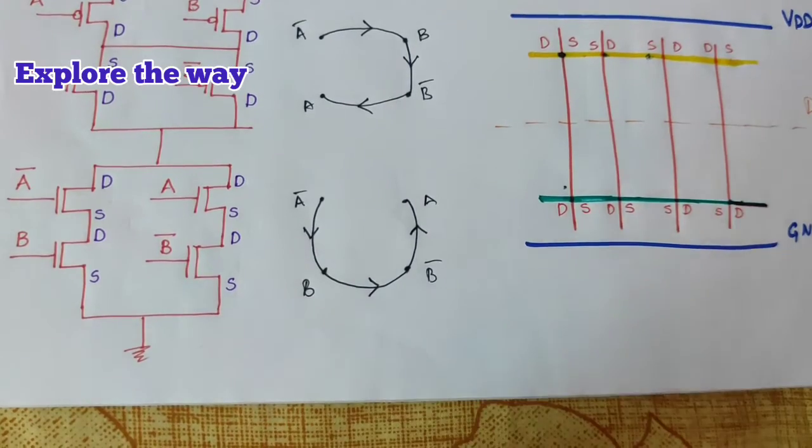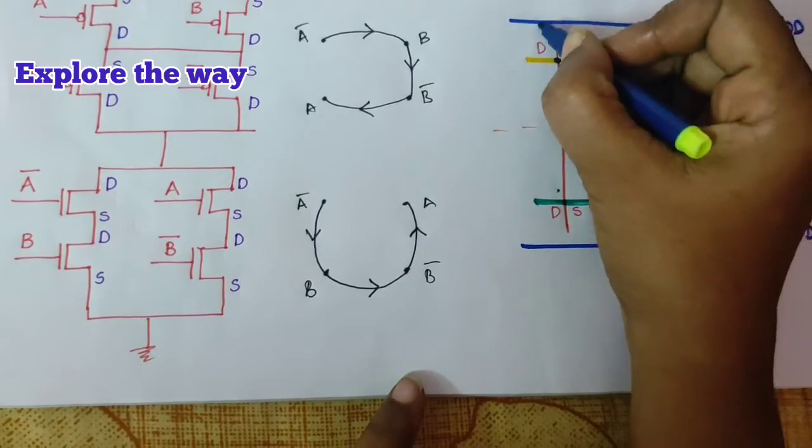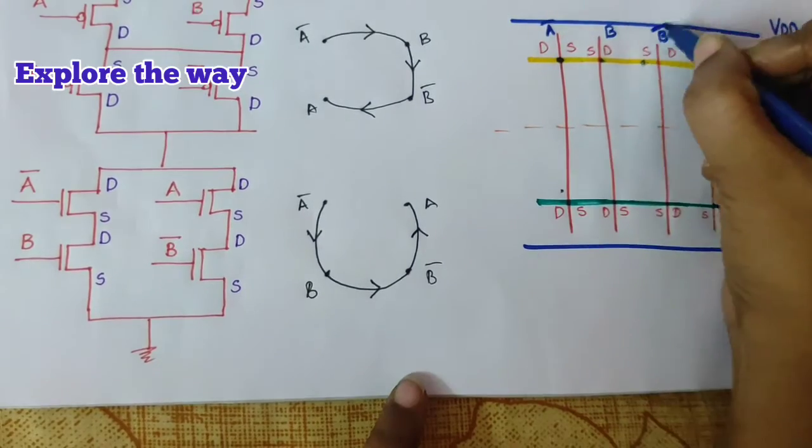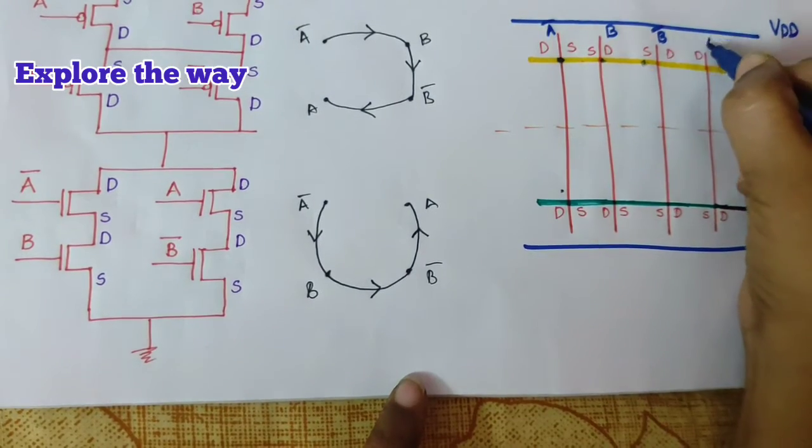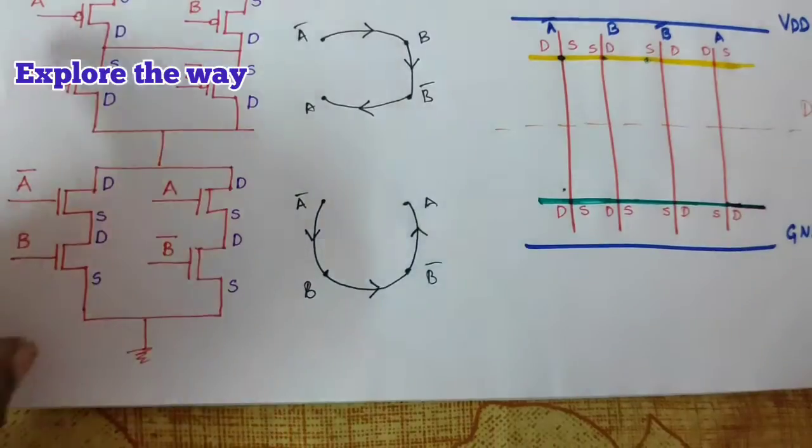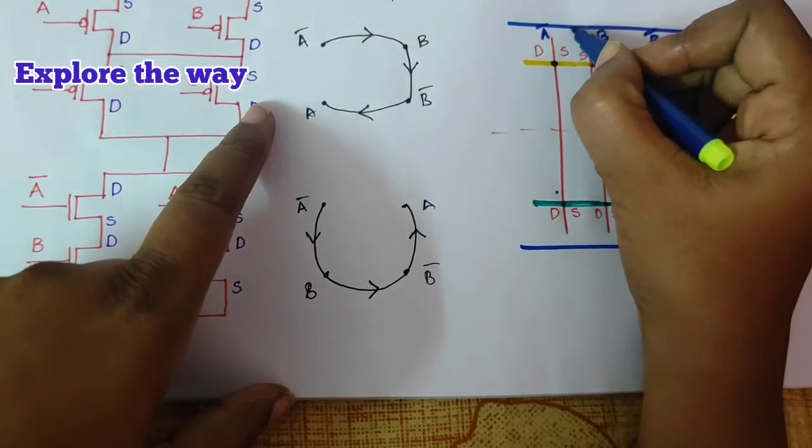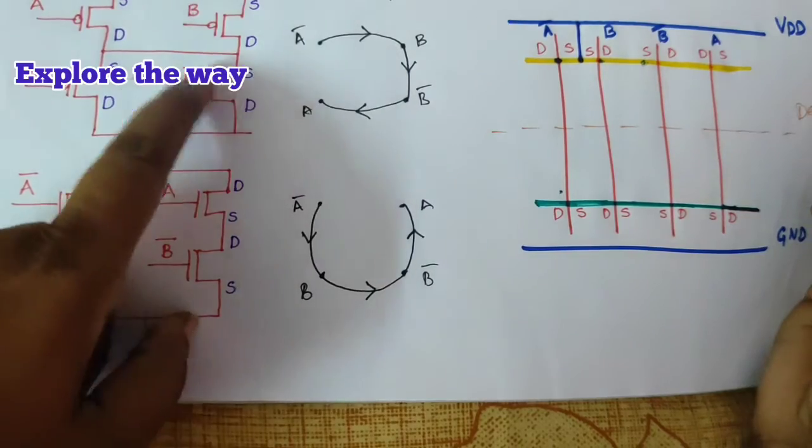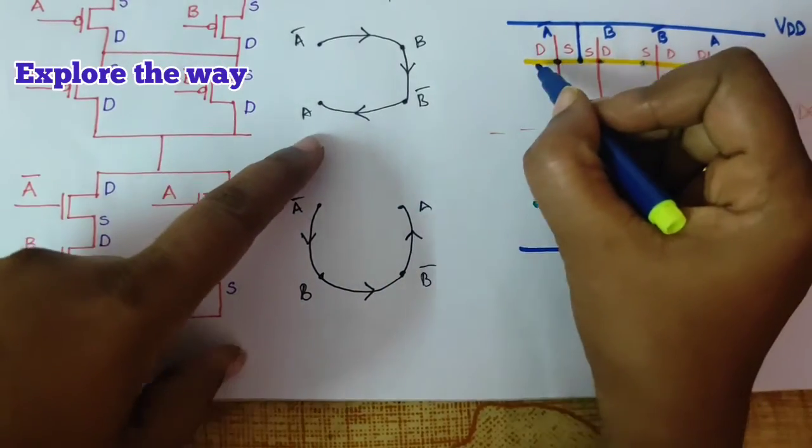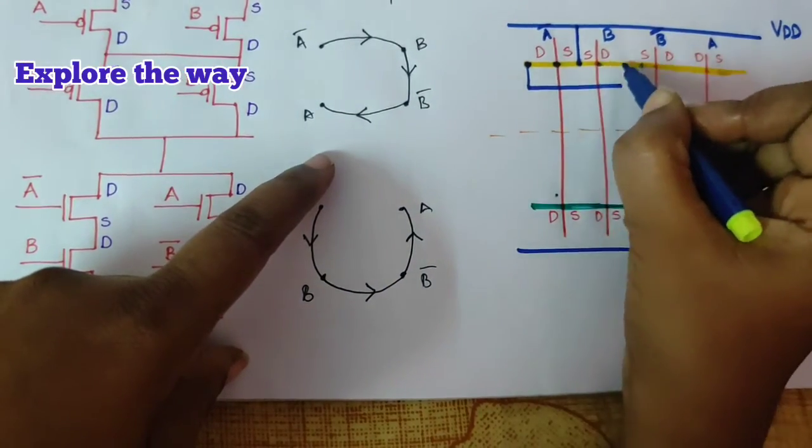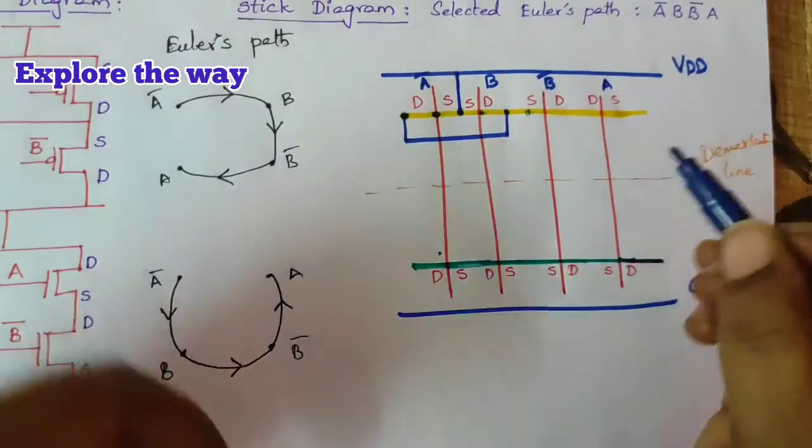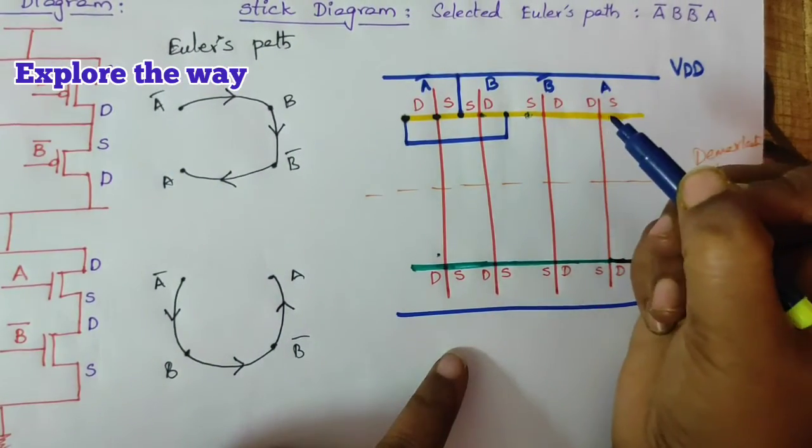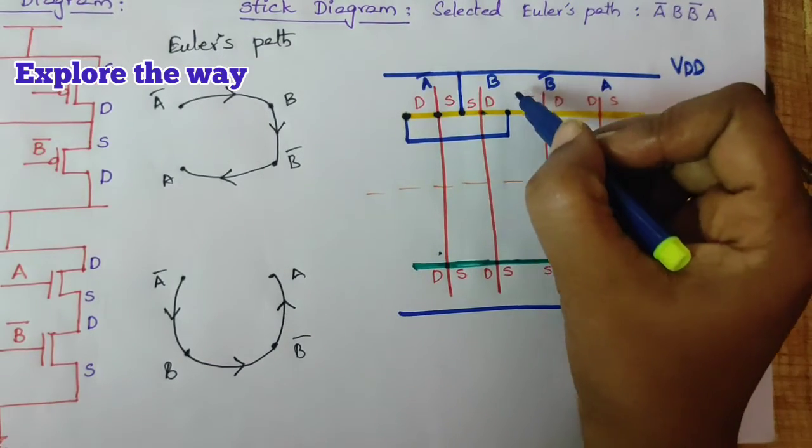Now, make the connections. This is a bar. B, b bar a. Now, a bar, b sources are connected to VDD. D, D. D, A bar b are connected. A bar b. And similarly, A b bar also connected. A b bar.